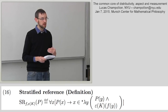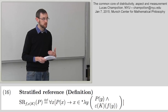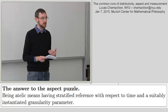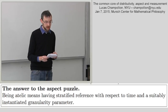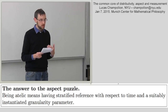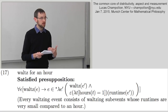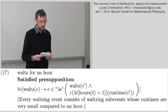The general definition says that a predicate P has stratified reference with respect to a measure or trace function f and a granularity parameter epsilon if every entity or event x in P consists of one or more entities or events y such that P holds of each y and each y is very short when measured along the dimension given by the relevant parameter. We can now say that 'waltz for an hour' is acceptable because waltz has stratified reference with respect to time and whatever counts as very short compared to one hour.